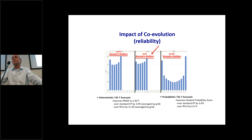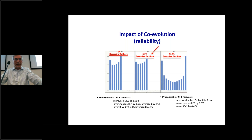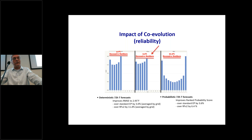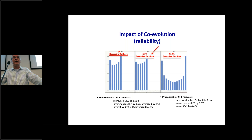I wanted to look at the impact of co-evolution compared to the standard process. The right-hand rank histogram for the baseline model showed 21% excessive outliers outside what the reforecast ensemble produced. Using my standard evolutionary programming technique reduces that U-shape collapse to about 4.7% excessive outliers — a big improvement. Using co-evolution reduces it further by about 50%, down to 2.2%. So it actually improved both the deterministic and probabilistic performance of the system, and this was for temperature forecasts — the best-behaved kind of weather forecast variable.